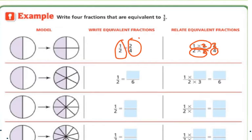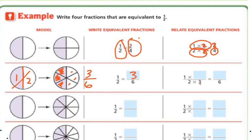Let's look at this next one. Notice I shaded the same. This one is my 1/2. This one has the 1/2 shaded, but I broke it into 6 parts. So my bottom number is going to be 6, and if I look at my shaded, I've got 3. So 1/2 is equivalent to 3/6. I multiplied — if I multiply the bottom by 3 and the top by 3, I get 3/6. 1 times 3 is 3, and 2 times 3 is 6.